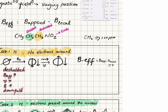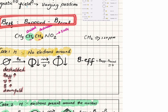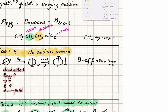Since these two sets of protons are in two different chemical environments, they are going to experience different amounts of magnetic field. The actual magnetic field experienced by the nucleus can be calculated using the formula: B_effective = B_applied − B_local. B_effective is the actual magnetic field experienced by the nucleus, B_applied is the external magnetic field you apply, and B_local is the magnetic field created by the electrons surrounding the nucleus.